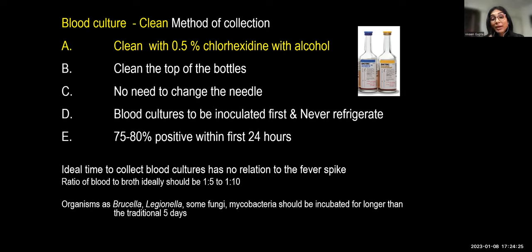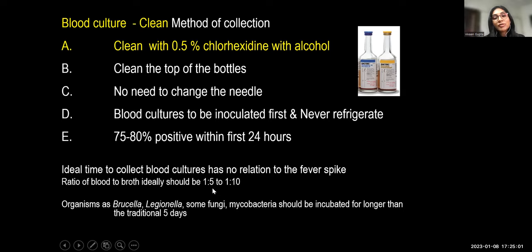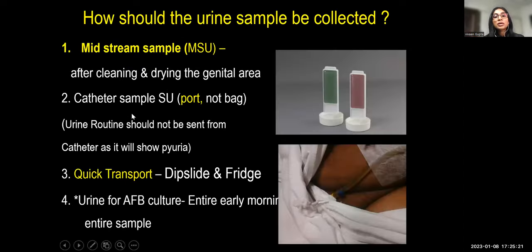Most pathogens — 80% — grow within the first 24 hours; S. aureus can grow within 12–16 hours. GNB also grow very fast. Timing of collection has no relationship to fever spikes. The most important factor is volume and blood-to-broth ratio, which should ideally be 1:5 to 1:10 — so 8–10 mL per bottle. For difficult-to-grow organisms like Brucella, incubation can be extended to around 15 days.